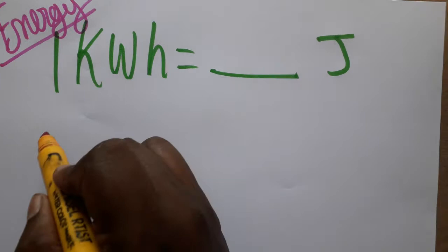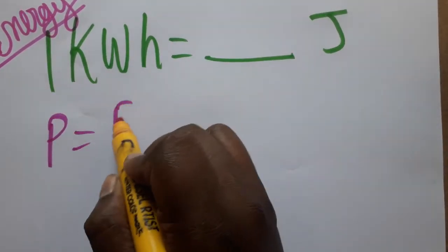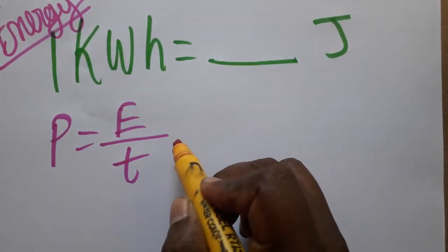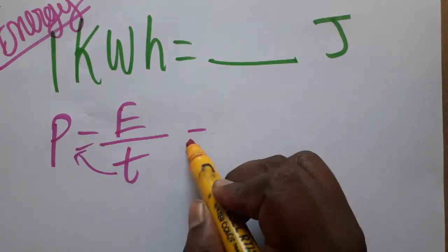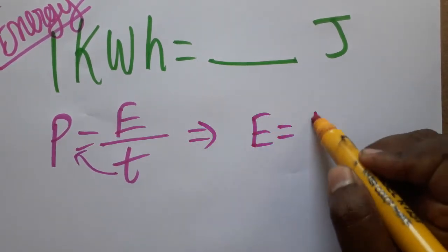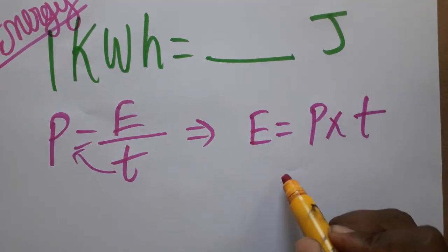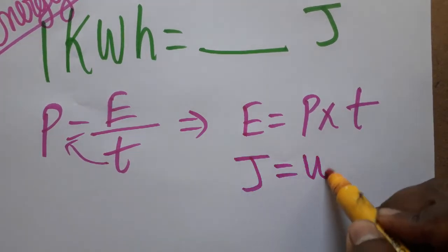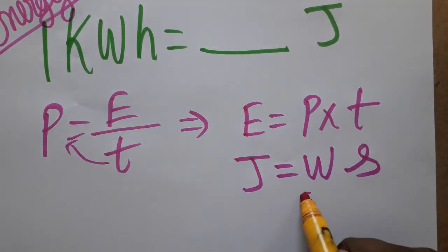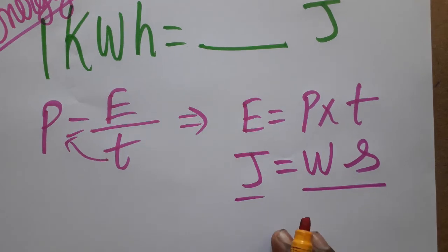kWh is equal to joules. Power is equal to energy divided by time. Taking time to that side, we'll get energy is equal to power times time. Energy's unit is joules, power's unit is watts, time's unit is seconds. So watt-second is joules.